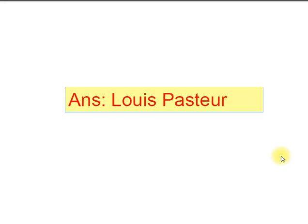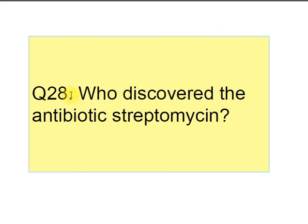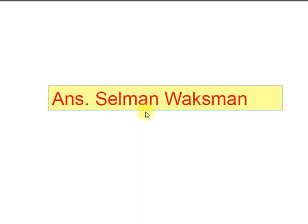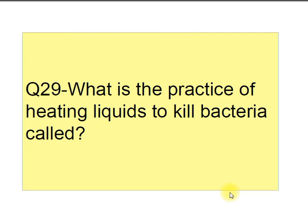Question number twenty-eight: who discovered the antibiotic streptomycin? Answer is Selman Waksman. He discovered streptomycin from Streptomyces griseus. It was the second antibiotic to be discovered after penicillin.